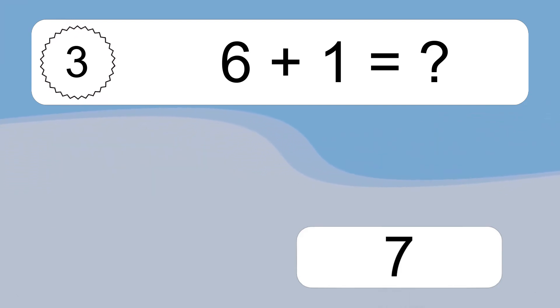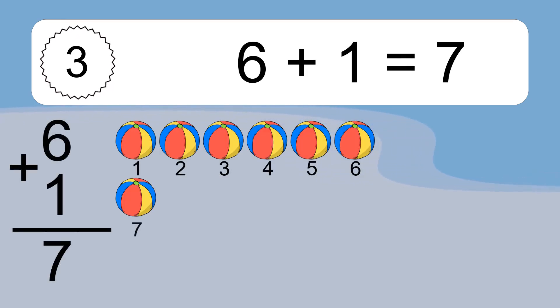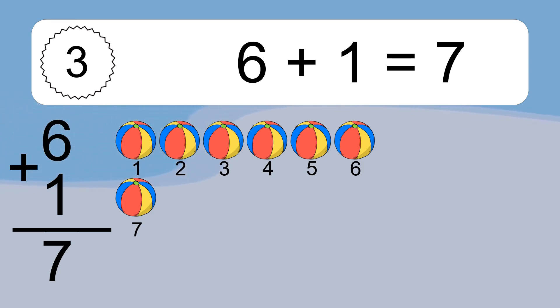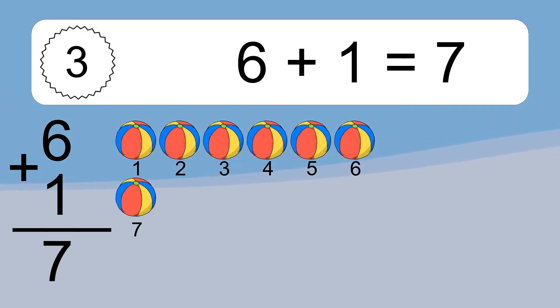6 plus 1 equals what? 6 plus 1 equals 7. Let's count it. 1, 2, 3, 4, 5, 6, 7.